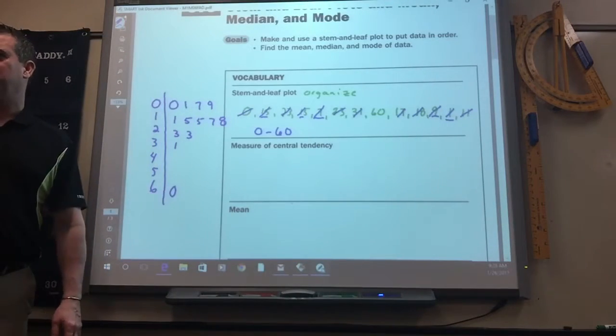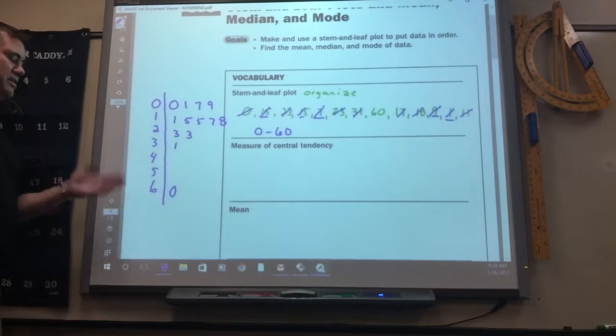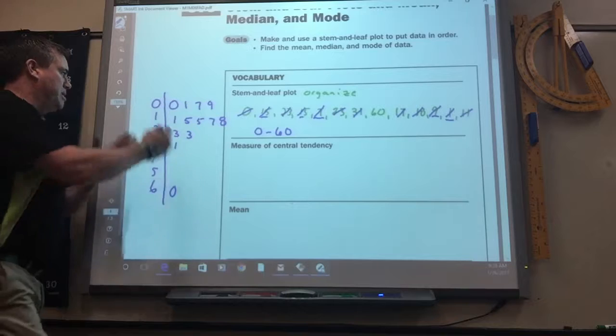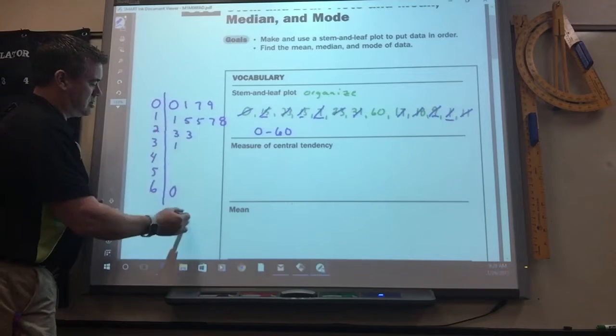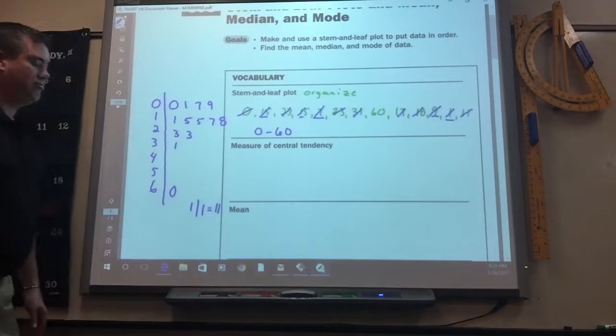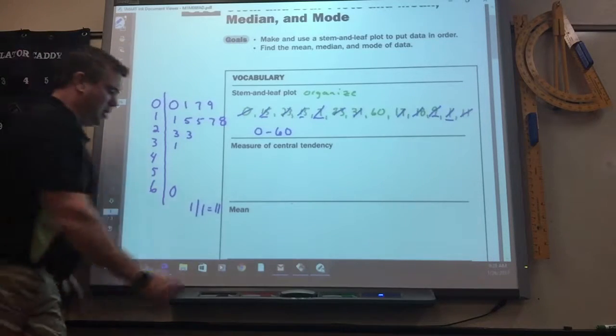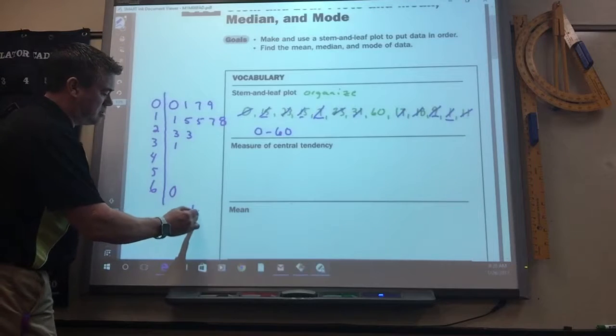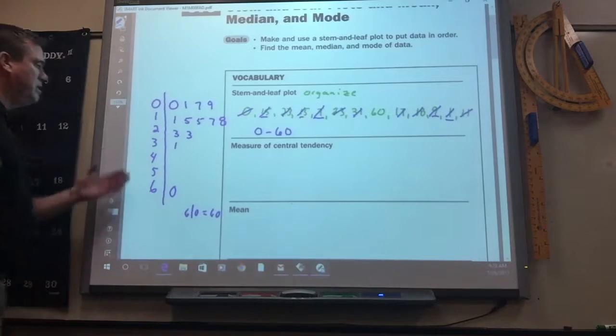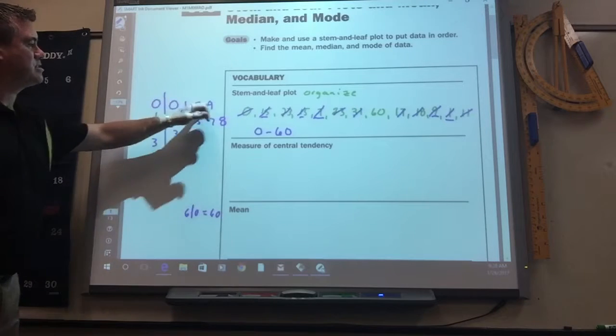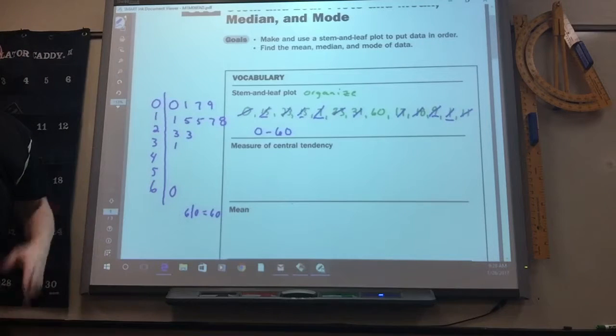You guys remember doing these before? Yeah. Now what most people forget is you got to put a key. You can pick any one of these, like 1/1 = 11. You can pick any example. I usually pick the last one down at the bottom, 6/0 = 60. But you could have picked any one. You could have put 2/3 = 23, or 0/9 = 9.